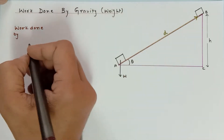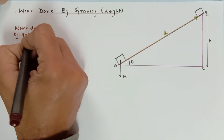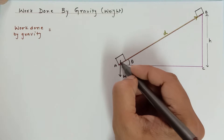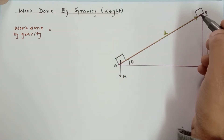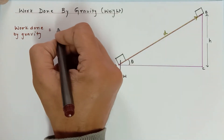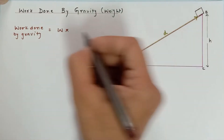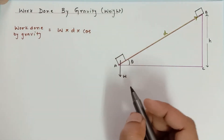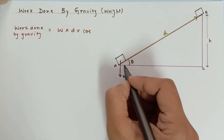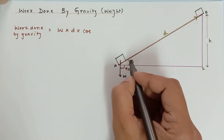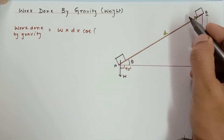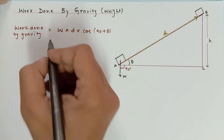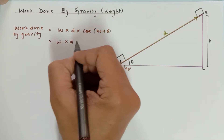Work done by gravity — gravitational force and weight are the same thing. Work done by gravity equals force multiplied by displacement. From A to B, we consider weight as the force, multiplied by displacement d, multiplied by cos of the angle between d and weight. This angle is 90 degrees here and theta here, so the angle between the displacement arrow and the weight vector is 90 plus theta.